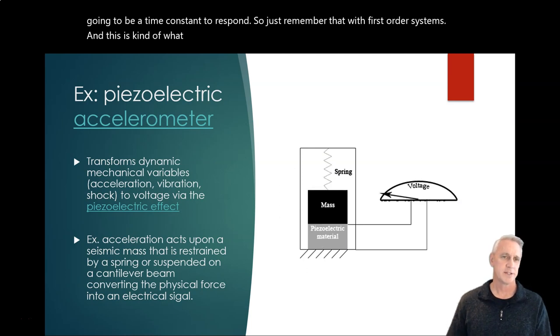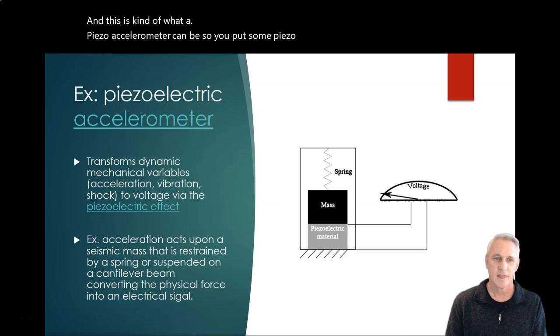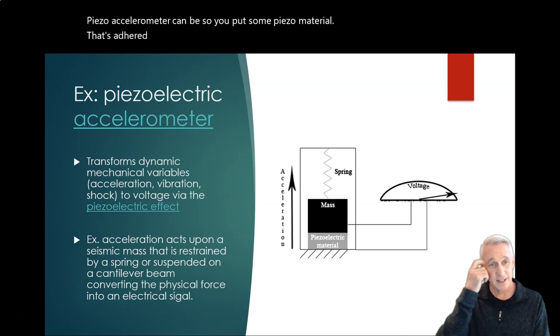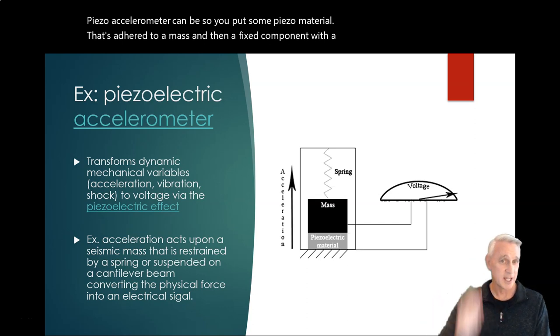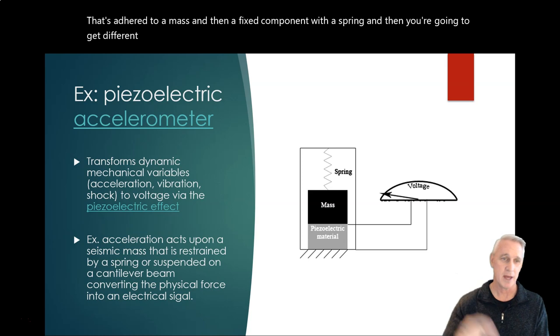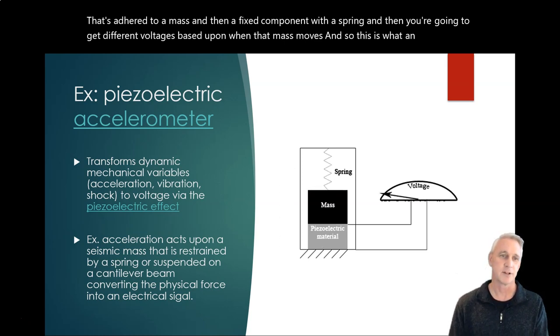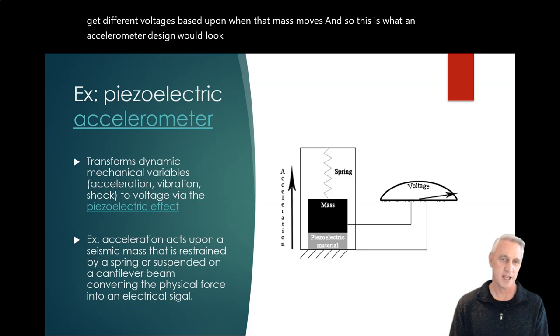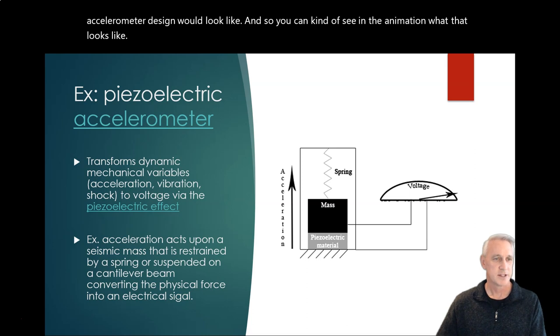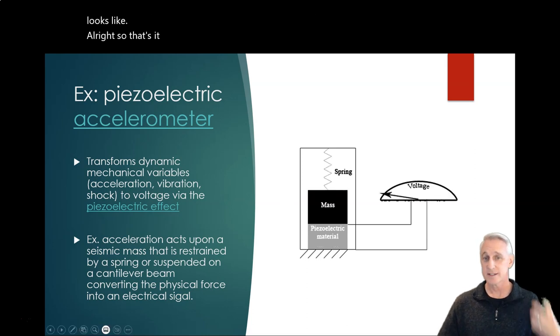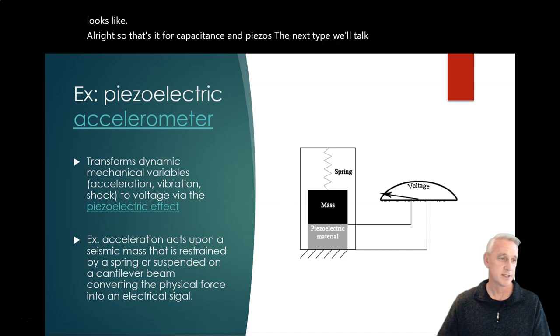And this is what a piezo accelerometer can be. So you put some piezo material that's adhered to a mass and then a fixed component with a spring, and then you're going to get different voltages based upon when that mass moves. So this is what an accelerometer design would look like. You can kind of see how in the animation what that looks like. All right, so that's it for capacitance and piezos. The next type we'll talk about is temperature.